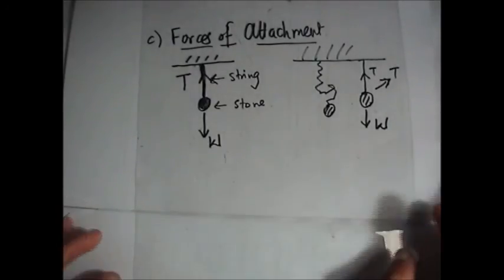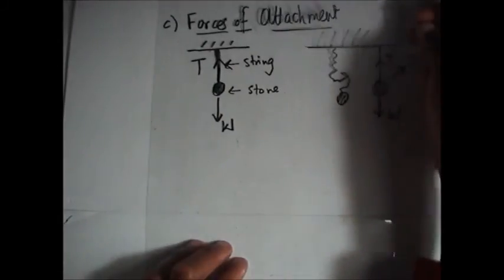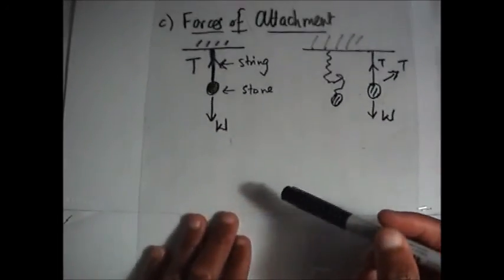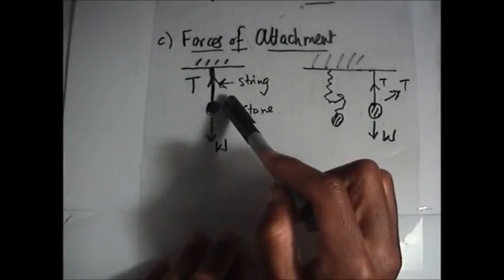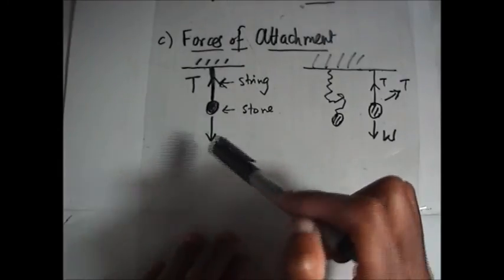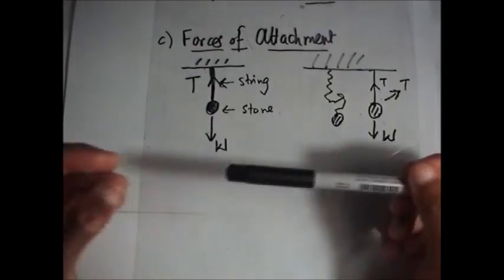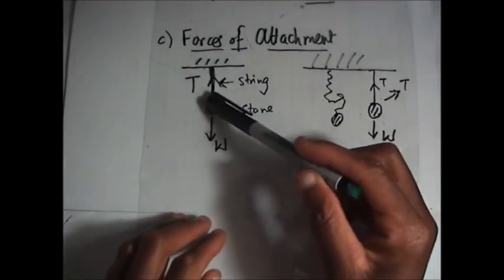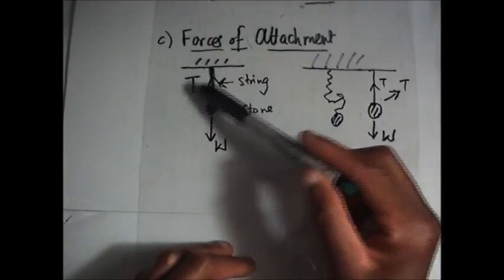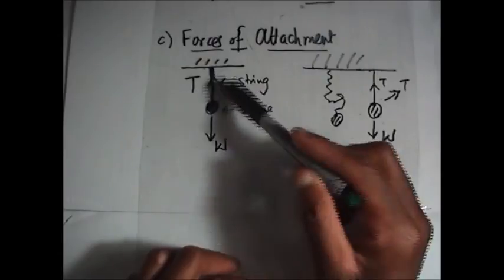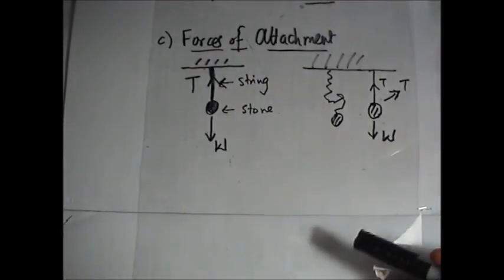As a recap, we'll be discussing something called equilibrium in the next video. The stone does not move due to equilibrium between the tension force and the weight force — they pull in opposite directions but in equal amounts, so the stone remains stationary. Stay tuned for that one.